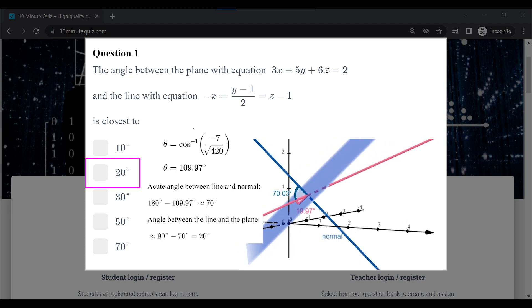That's the general method for finding the angle between a line and a plane. We find the normal vector to the plane, the angle between the line and the normal vector, and then subtract that from 90 degrees. I hope that makes sense.